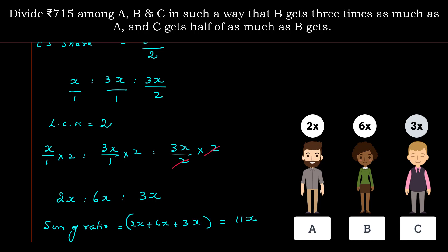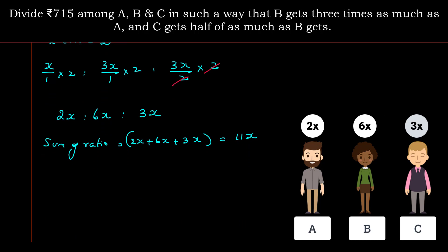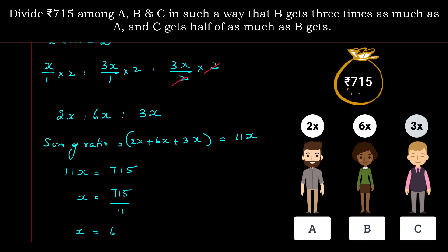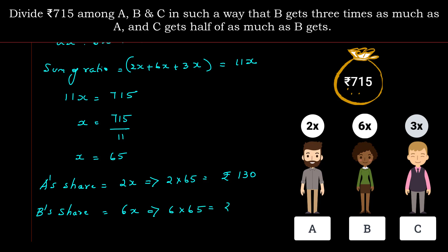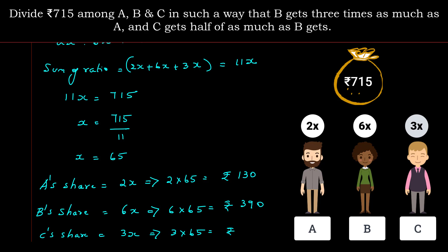Equate the sum 11X with the total share: 11X = 715, so X = 715 ÷ 11 = 65. Now substitute back: A's share = 2X = 2 × 65 = Rs. 130. B's share = 6X = 6 × 65 = Rs. 390. C's share = 3X = 3 × 65 = Rs. 195.